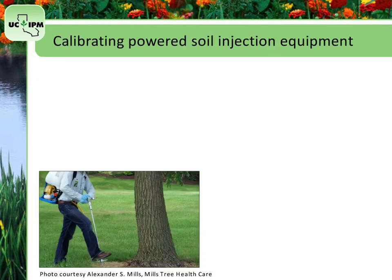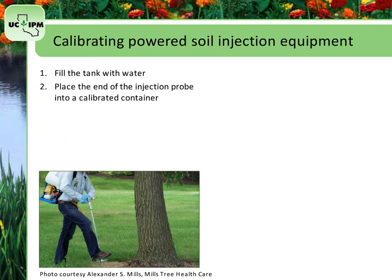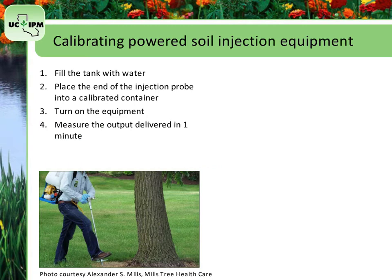To calibrate powered soil injection equipment, first fill the tank with water. Second, place the end of the injection probe into a calibrated container. Third, turn on the equipment. Next, measure the amount of output delivered in 1 minute. Finally, repeat several times to get an average output rate in fluid ounces per minute.